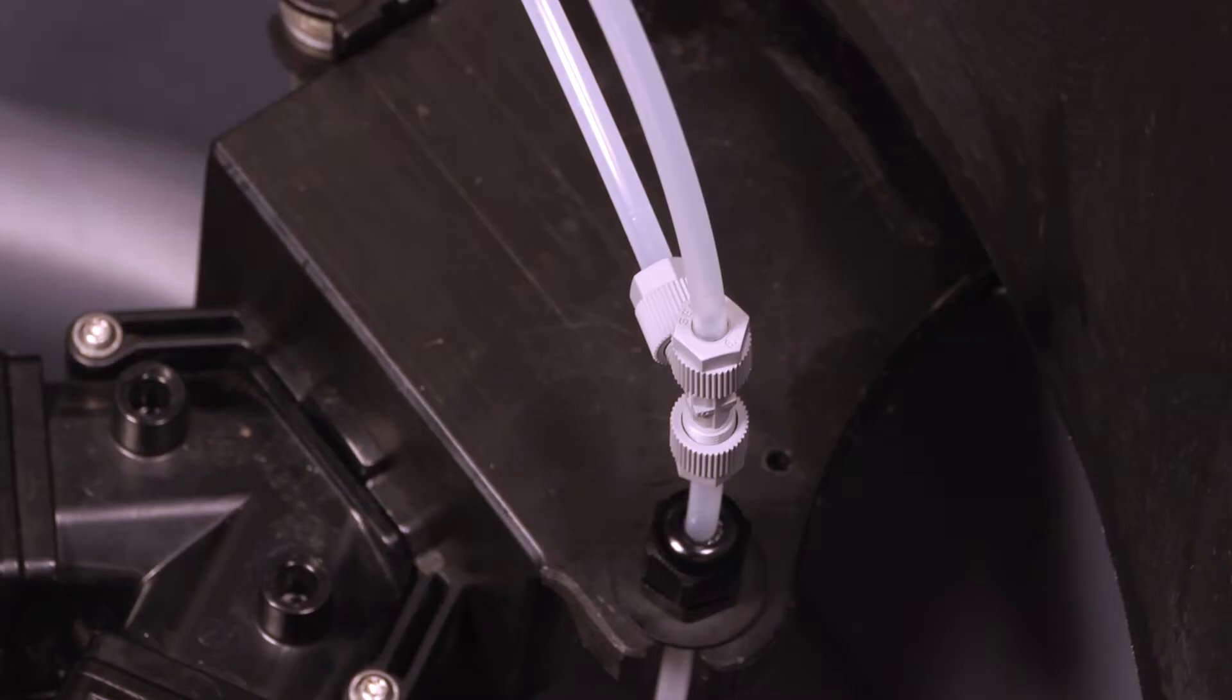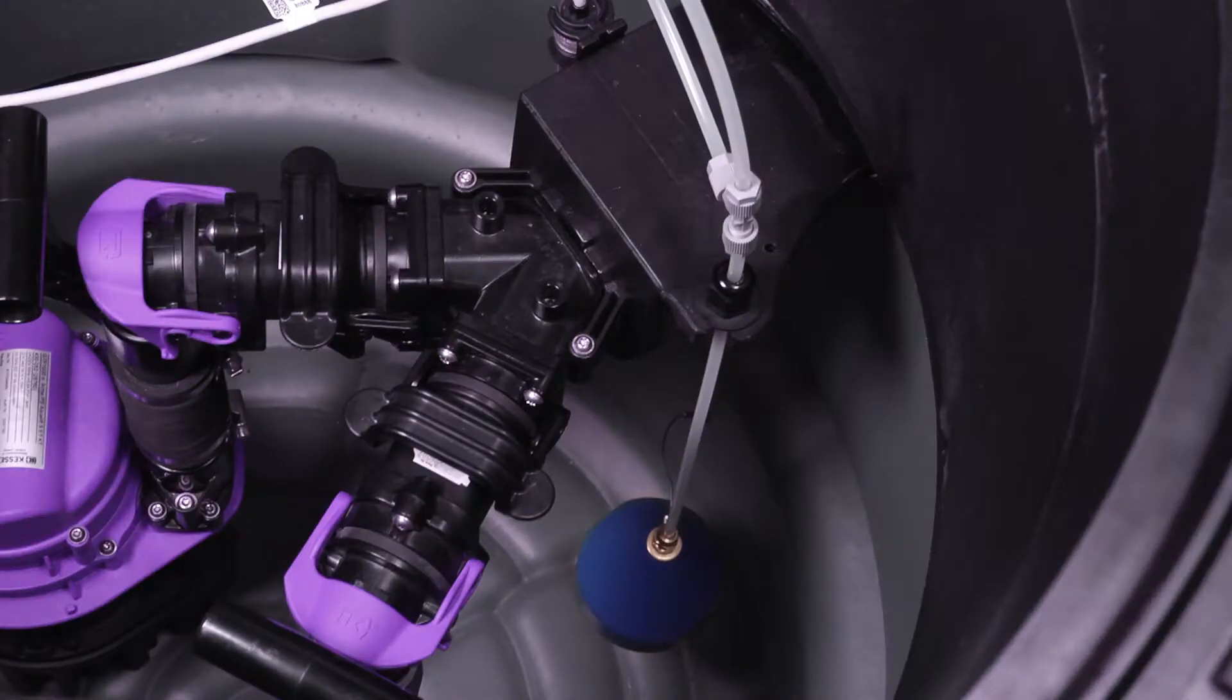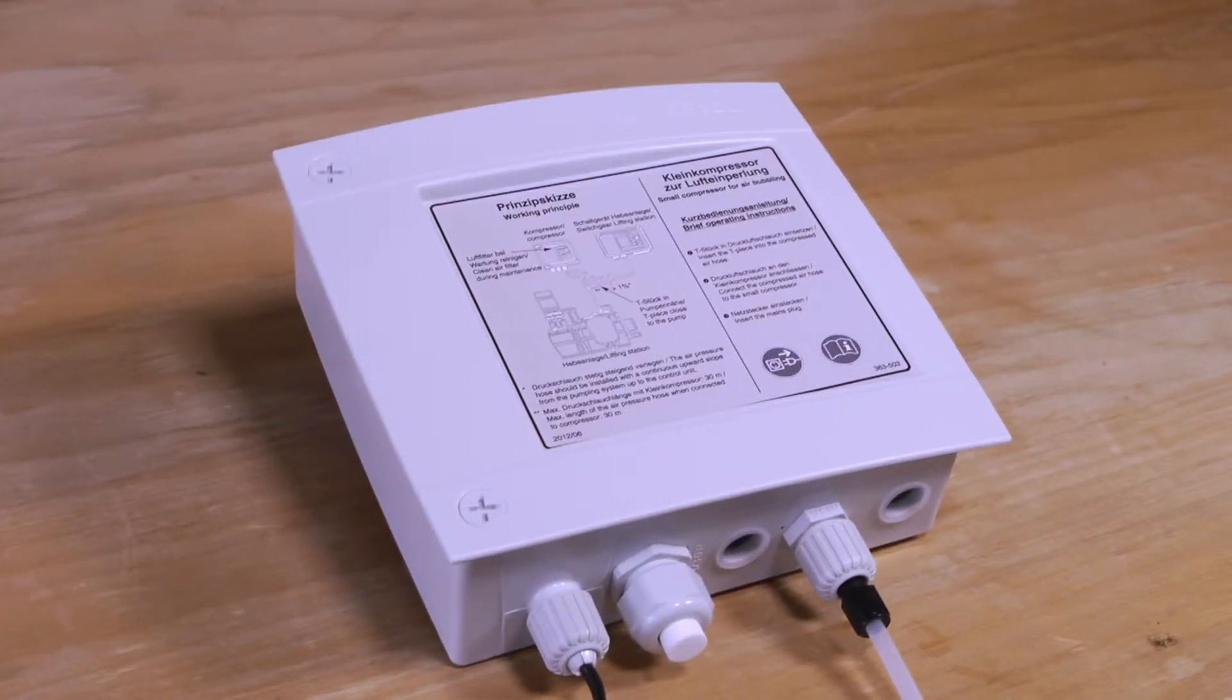Use the supplied T-piece to connect one end of the hose as close as possible to the submersible pressure switch or the immersion pipe. Then connect the other end to the compressor.